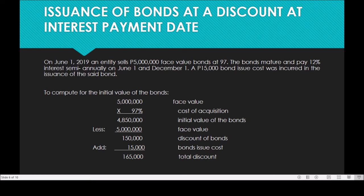To compute the initial value of the bonds: 5,000,000 multiplied by 97% gives a proceeds of 4,850,000. The face value is 5,000,000, so the discount is 150,000. We have a 15,000 bond issue cost which, since this is a discount, is added to the discount. Therefore, the total discount on the bonds is 165,000 pesos, composed of the discount on bonds payable of 150,000 plus the bond issue cost of 15,000.